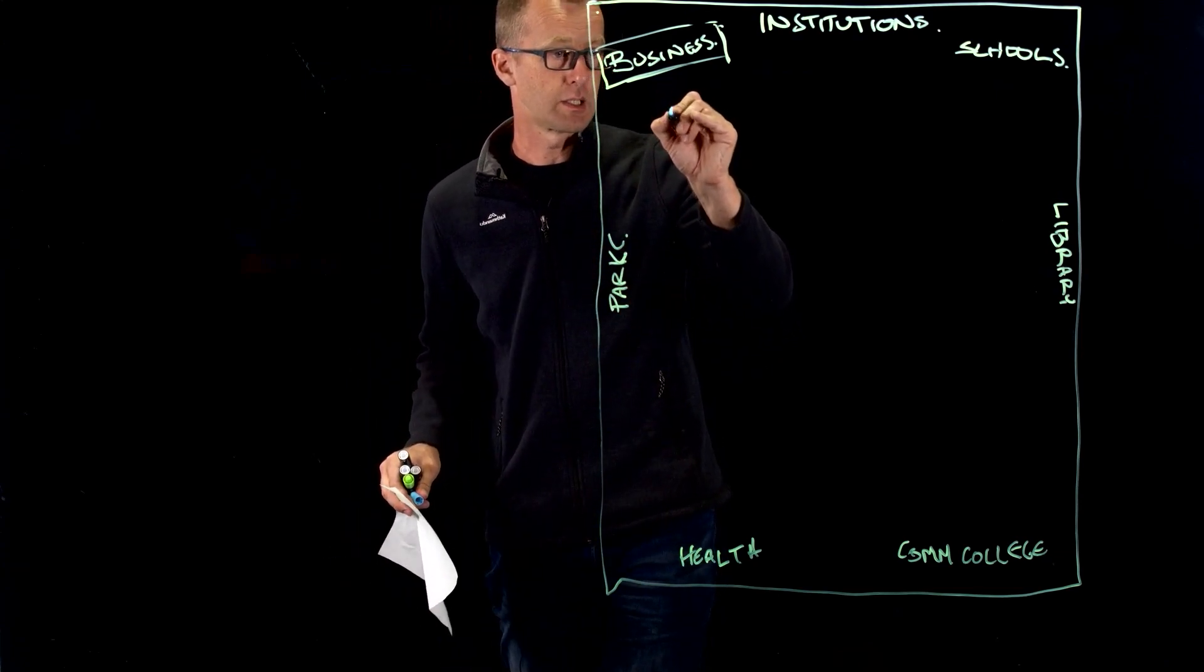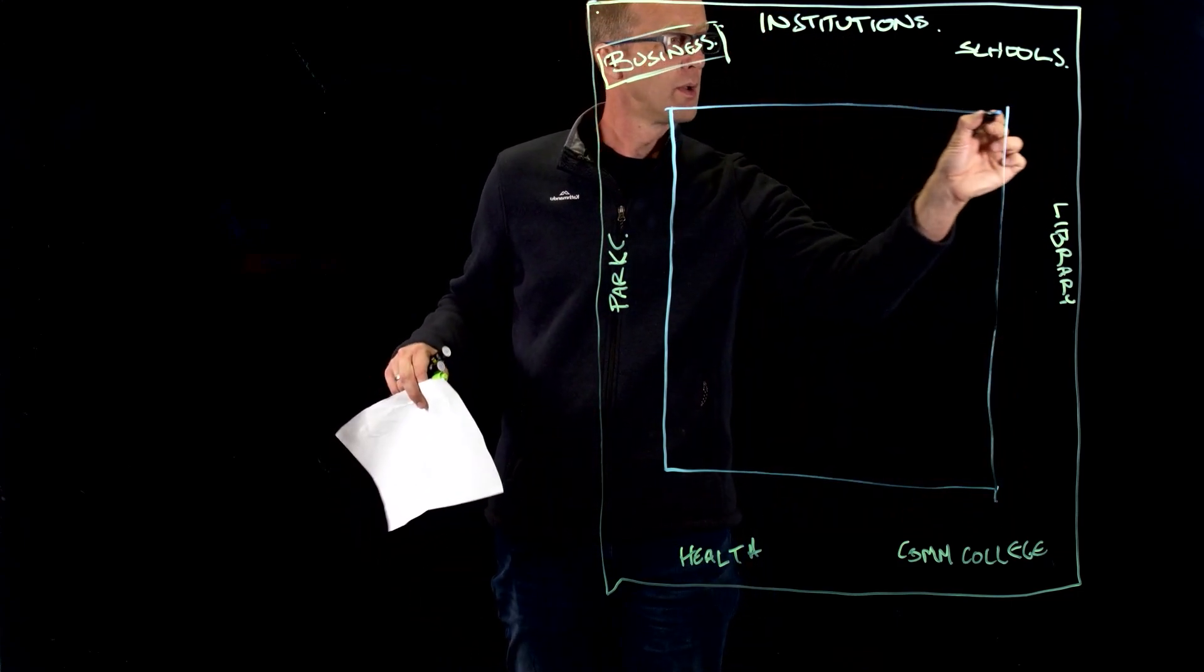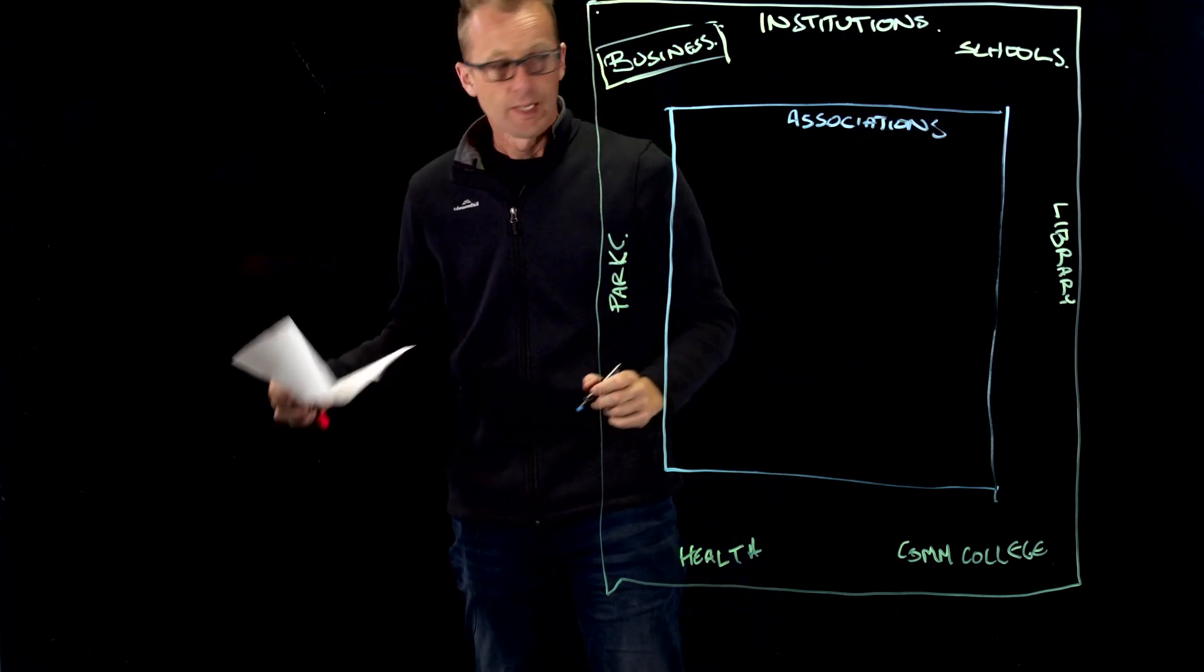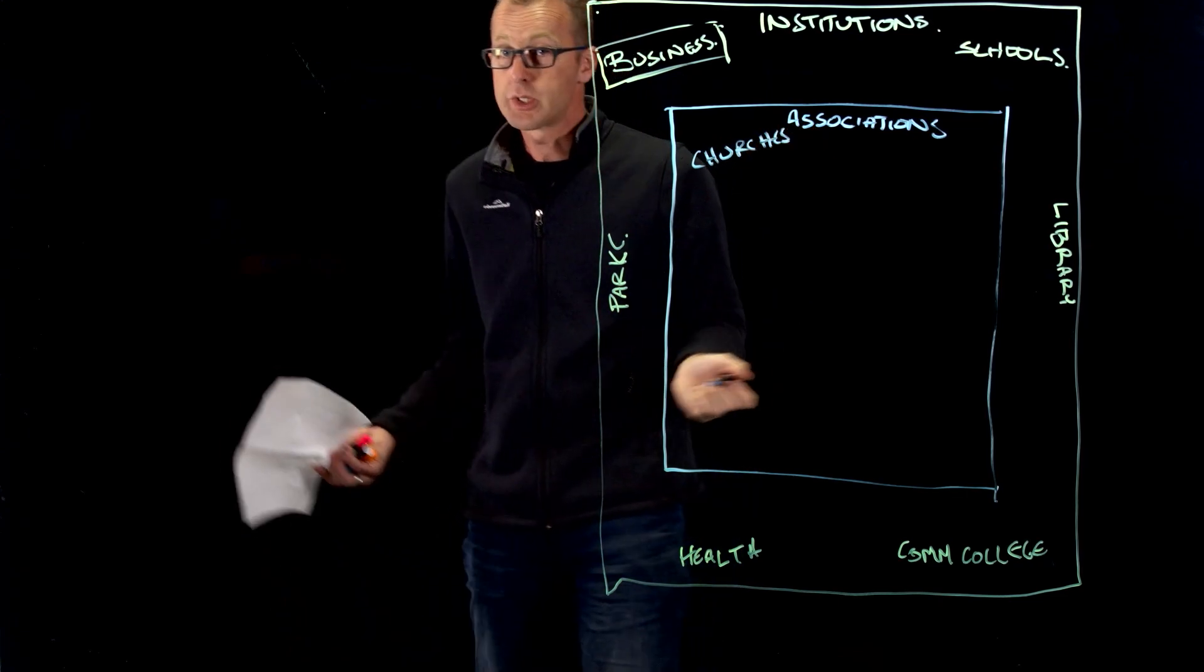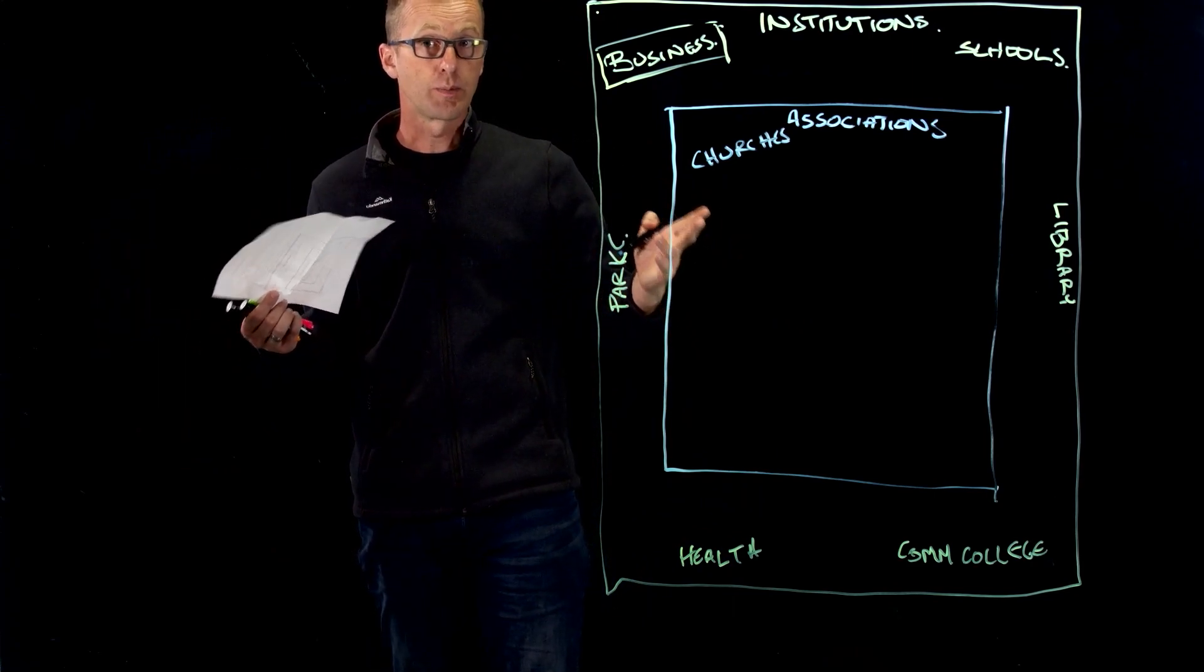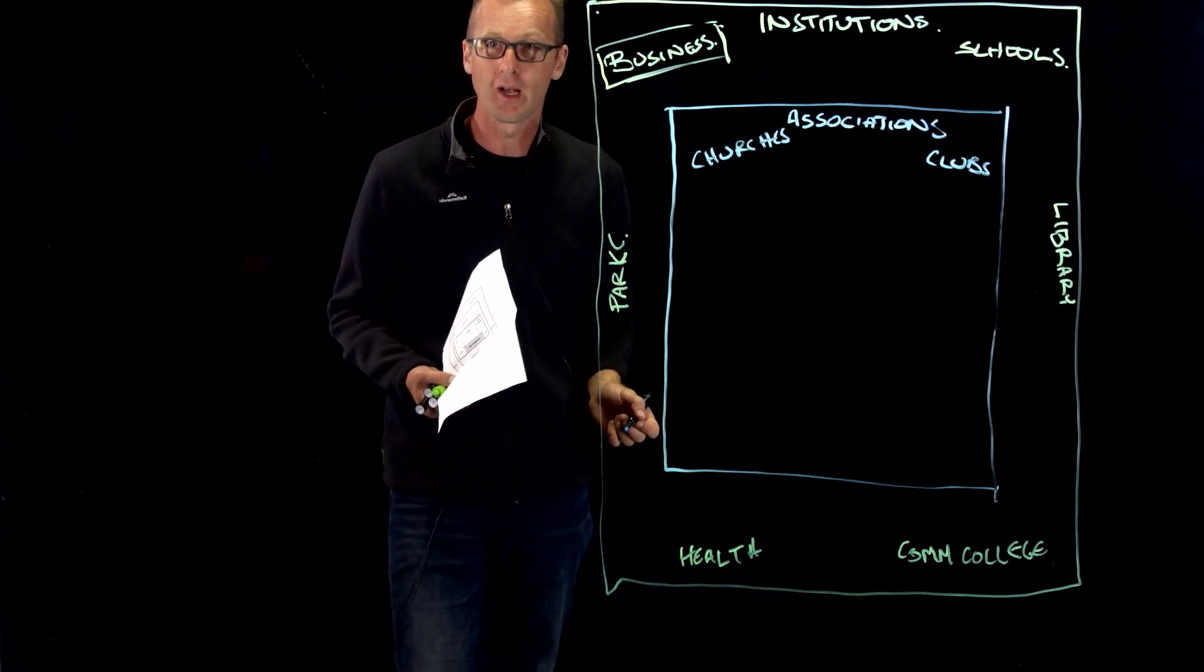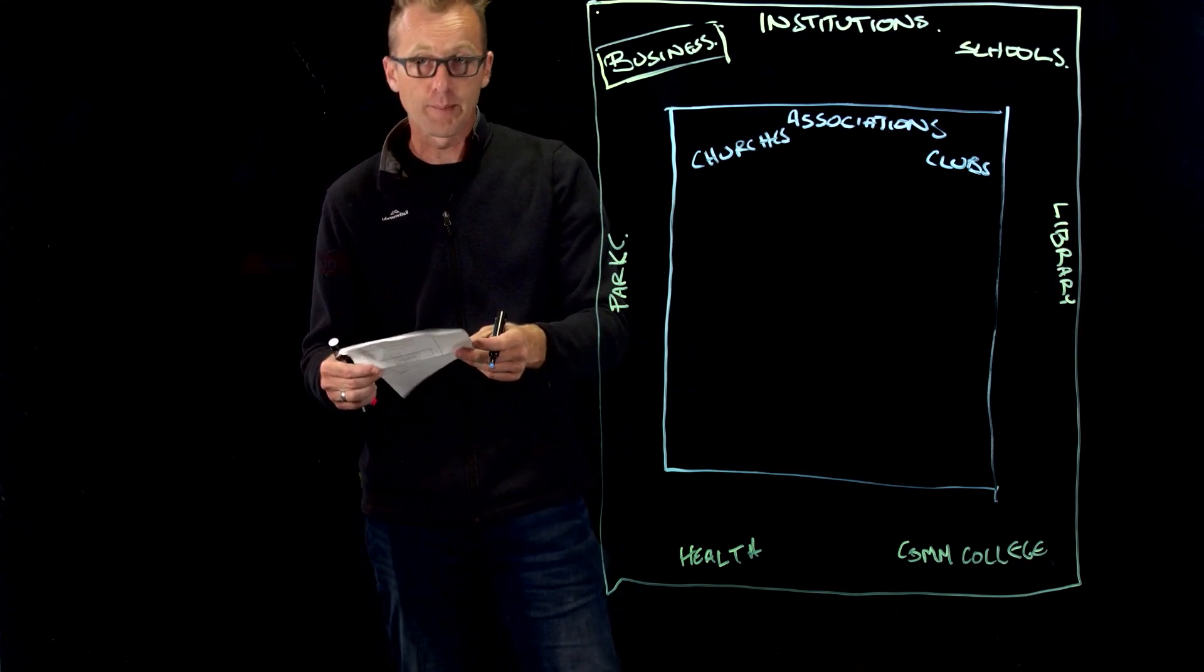Now, if we think about the next level, it gets a little more informal, but we're talking about associations. We might have churches. Churches are a community group, and while your objectives might not be exactly the same as theirs, there might be crossover there. There's clubs. What are the clubs that exist? You might even find clubs that you didn't even know anything about, maybe a Dungeons and Dragons club, mountain bike riding club, or things like that.